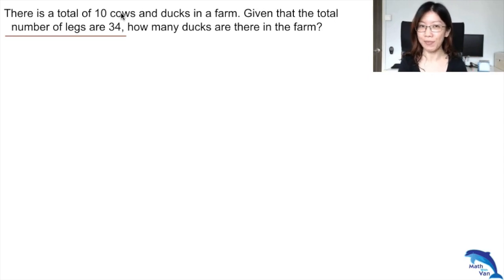Let's take a look at this question: There is a total of 10 cows and ducks in a farm. Given that the total number of legs is 34, how many ducks are there in the farm?